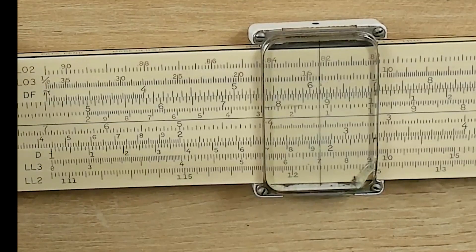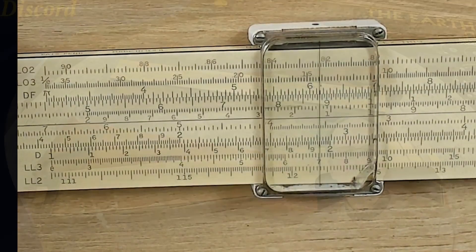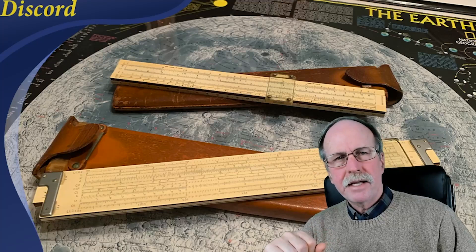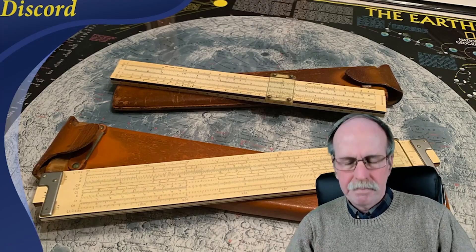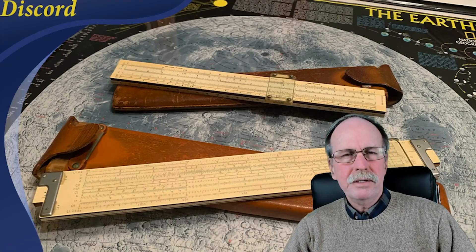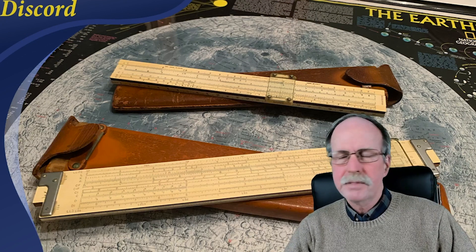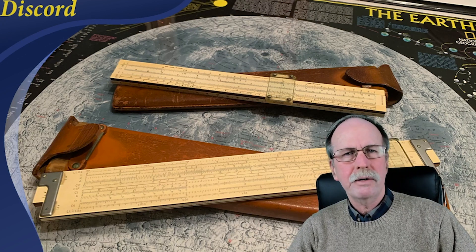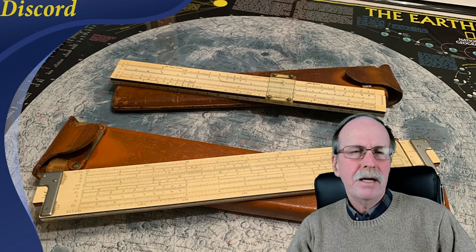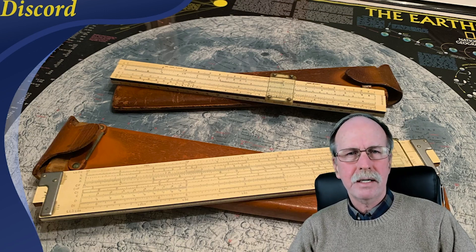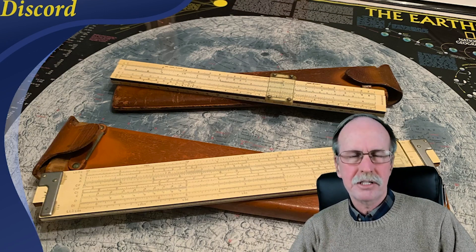So, again, use the right scale for the calculation that you're doing. Now, the accuracy of slide rules depends on how long they are. Sometimes you can squeeze a little extra precision out of a 10-inch slide rule, something that is more like a 20- or a 30-inch slide rule, by using a little creativity when it comes to splitting up the scales a little bit.